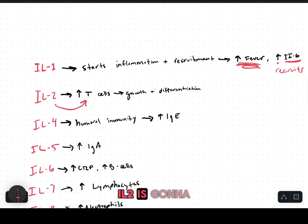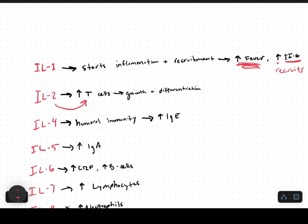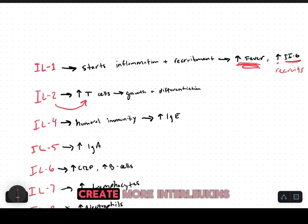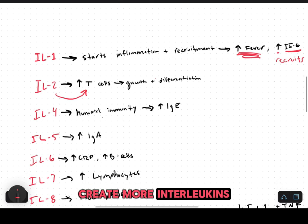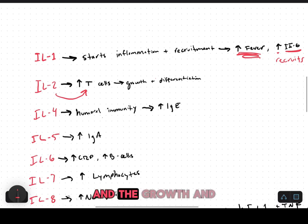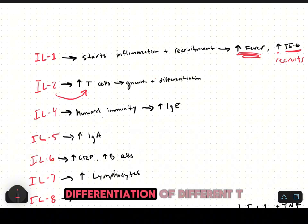Interleukin two is going to increase our T cells, which in return creates more interleukins and drives the growth and differentiation of different T cells.